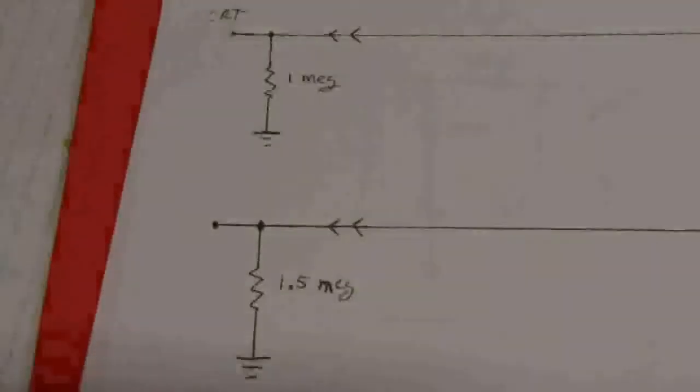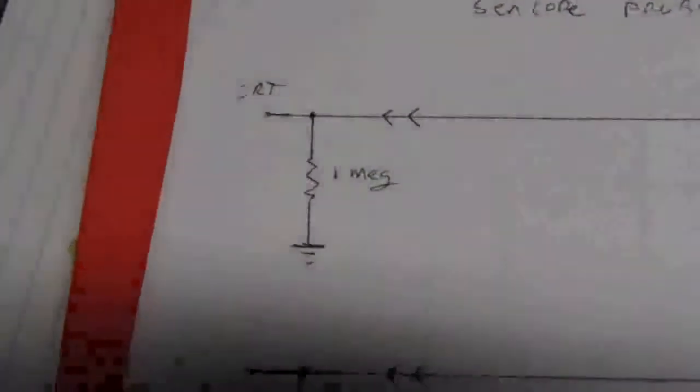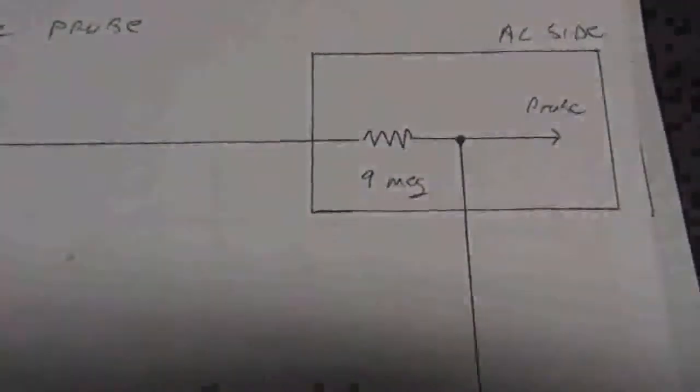This feeds into the DC side, 1.5 megaohm resistance. The AC side has a 1 megaohm resistance. You'll notice there is no times 10 switch on these probes.